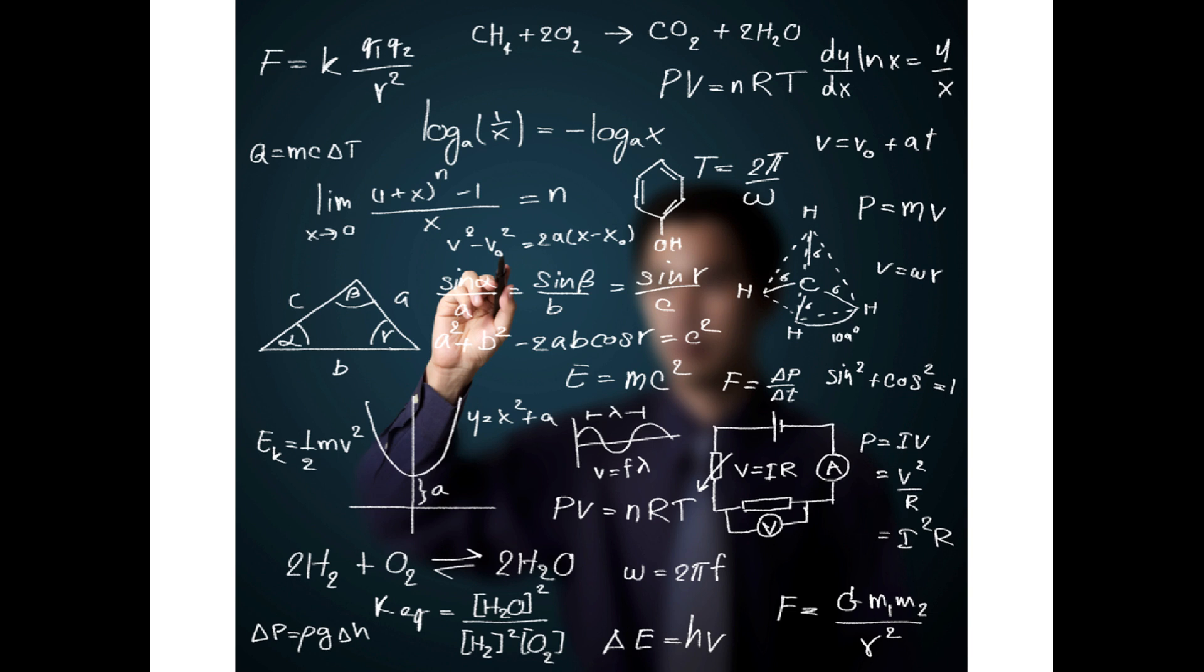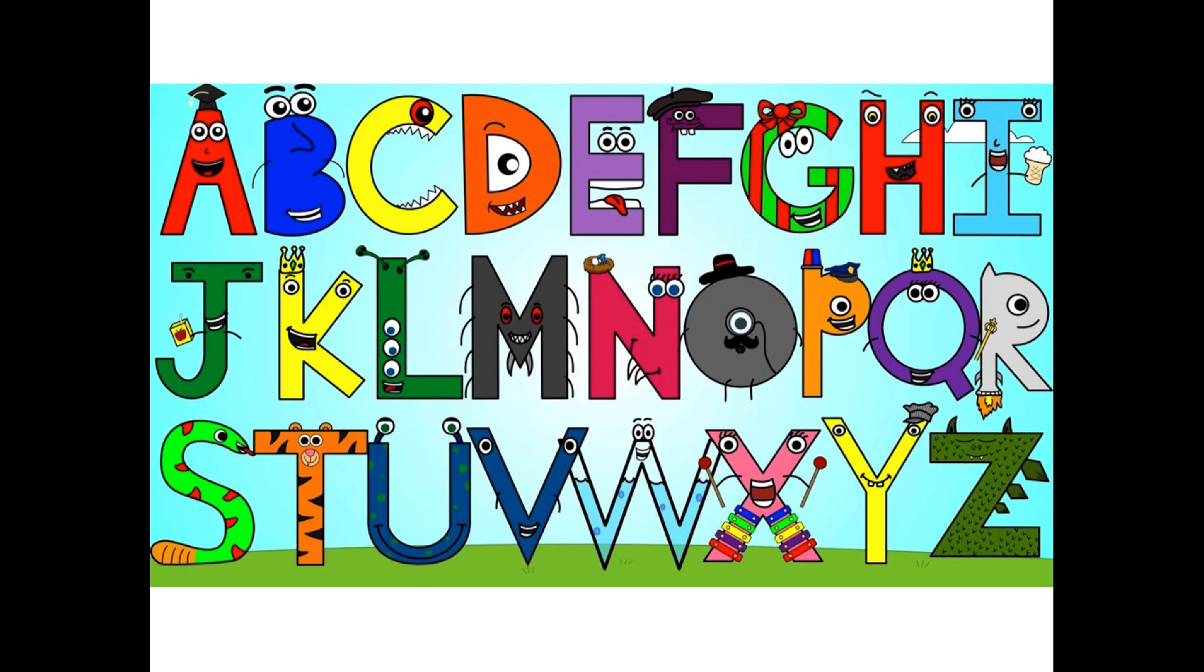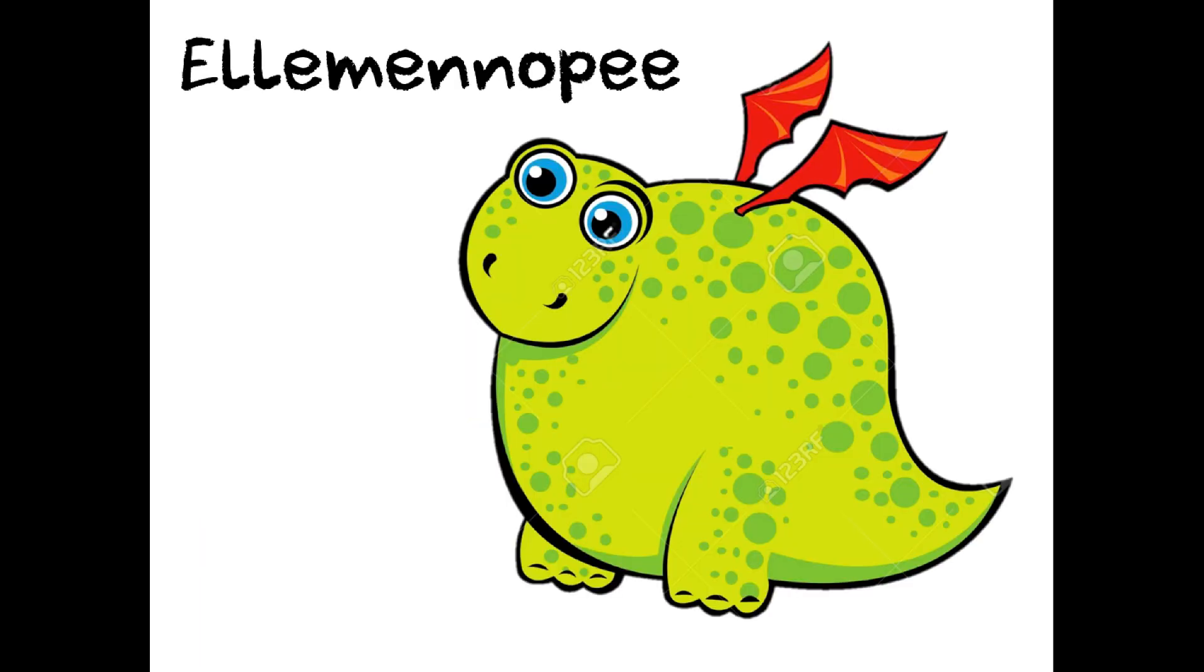Children start their reception year at wildly varying abilities. Many of course can already count to ten and beyond. They can recite sequentially the order of numbers or rote counting as it's known at this stage. But what does this really mean? Think of it this way. In a similar way they are able to recite or more accurately sing the alphabet. But do they really know for example what LMNOP actually is? Do they know that it's five separate letters and sounds and not some strange green blue spotty dragon called LMNOP? In a similar way children have had very few experiences to associate numbers with quantity by the time they reach school.